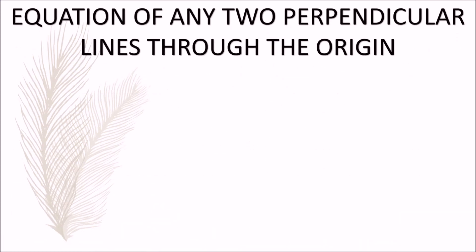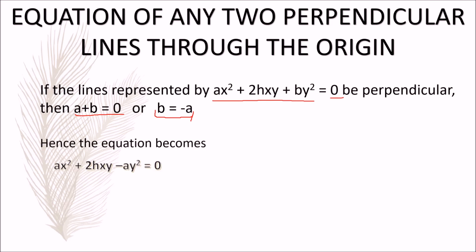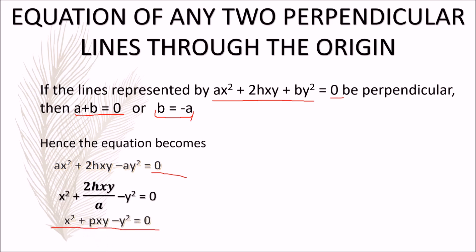Now let us learn the equation of any two perpendicular lines passing through the origin. If the lines represented by ax² + 2hxy + by² = 0 are perpendicular, then a + b = 0, so b = -a. Replacing b with -a gives ax² + 2hxy - ay² = 0. Dividing throughout by a: x² + (2h/a)xy - y² = 0. The coefficient of xy is 2h/a, which is a constant. Replacing this with constant p, the equation becomes x² - pxy - y² = 0, where p is any constant.